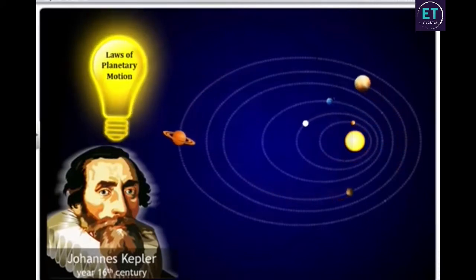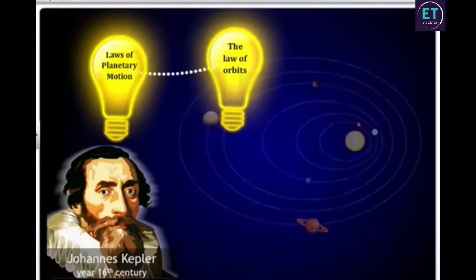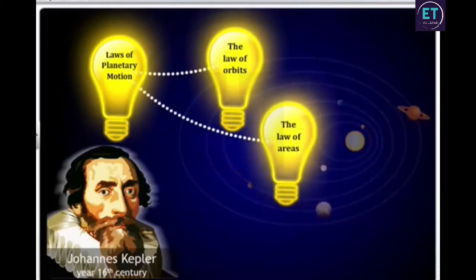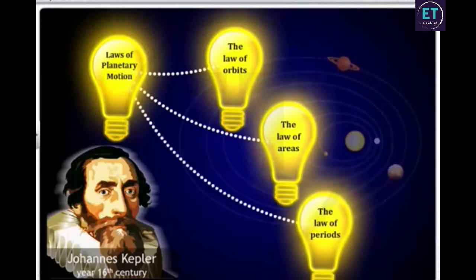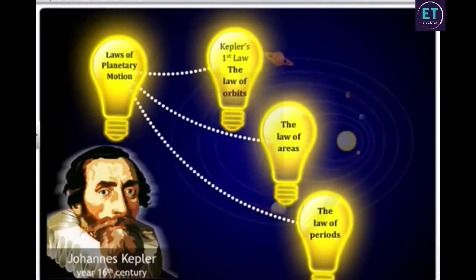Kepler's three laws of planetary motion are: the law of orbits, the law of areas, and the law of periods. Let's look at each law one by one.